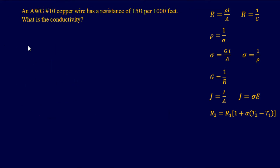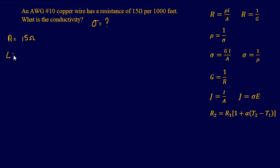Let's jump into another easy one. We have a 10-gauge copper wire that has a resistance of 15 ohms per 1,000 feet. What is the conductivity? Writing down what we know: the resistance equals 15 ohms, and the length is 1,000 feet.